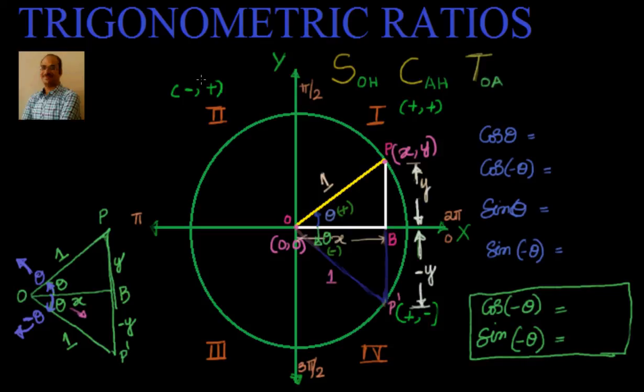In this video we will see how trigonometric ratios of negative angles and positive angles are related. What I mean by that is, if I have a point with coordinates x comma y which is making an angle theta in the positive direction of x axis in counterclockwise direction, suppose I take the same theta in clockwise direction, then how they are related.